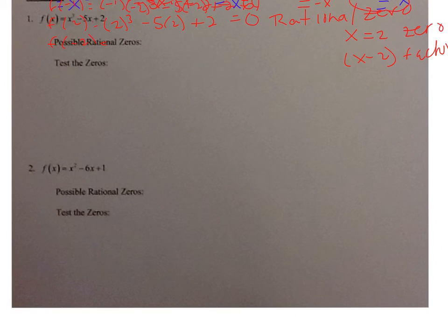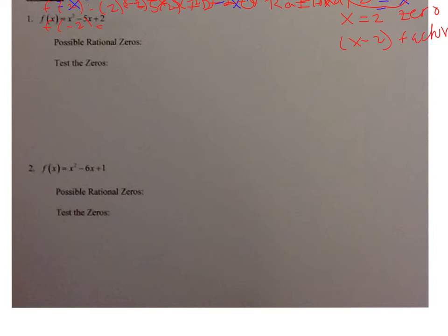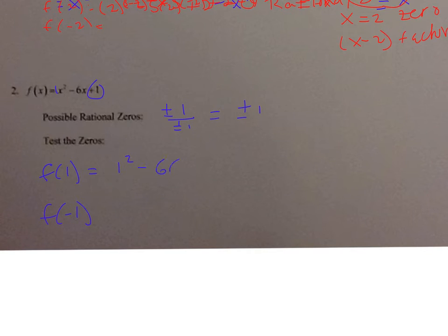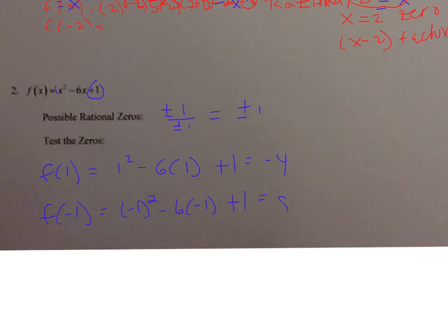Let's try another one: x squared minus 6x plus 1. My constant is 1, so factors are plus or minus 1. Leading coefficient is 1, so I divide by plus or minus 1, giving possible zeros of plus or minus 1. f of 1 equals 1 minus 6 plus 1, which is negative 4. f of negative 1 equals 1 plus 6 plus 1, which is 8. Neither gave a zero, so there are no rational zeros — there could be irrational zeros or imaginary roots.